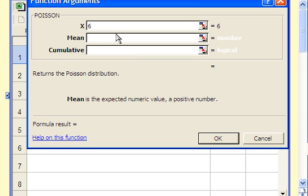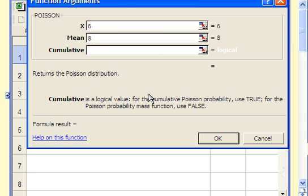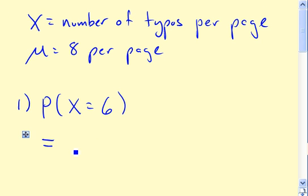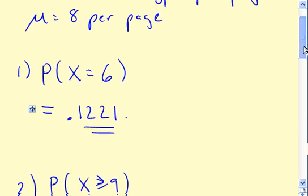The mean number of typos is 8, and it has a cumulative feature just like the binom dist function does. And in this case, we want that to be false, actually. We're interested in exactly 6 typos. We hit OK, and we're told that the probability is about 0.1221. So roughly 12% chance of having exactly 6 typos on a randomly selected page of this manuscript.